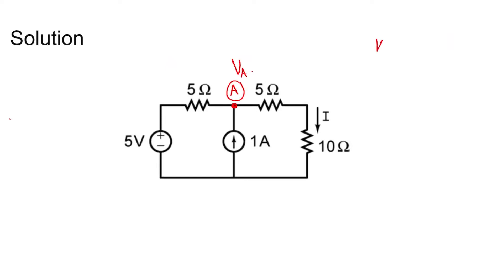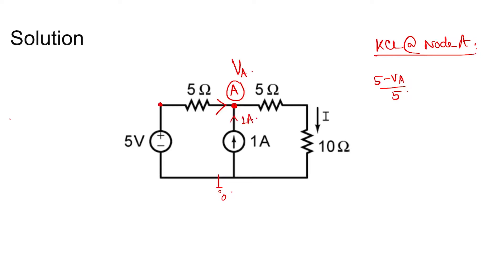Let's apply KCL at node A and let the voltage here be Va. This is the reference node at 0 volts, this node is at 5 volts, and this is Va volts. So 5 minus Va divided by 5 is one current, and 1 ampere is another. Applying KCL: 1 plus (5 minus Va)/5 equals Va divided by 15.